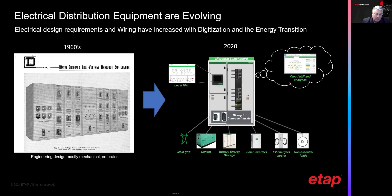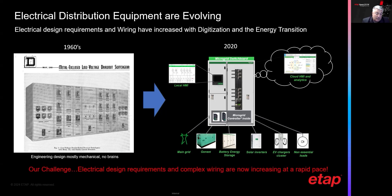This is an example of one of our microgrid offers where the PLC or industrial PC that's embedded inside is not only controlling the switchboard, but it's also interacting and controlling, in some cases, the other devices in the electrical network. Basically, our challenge is our electrical design requirements and the complexity of the wiring are increasing at a rapid pace.